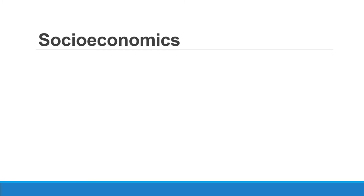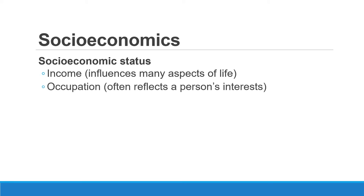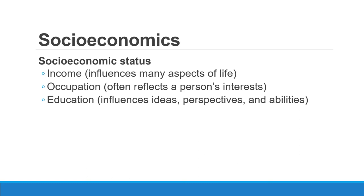Socioeconomics also impacts how people will react to certain speeches and presentations. A person's status is affected by their income — the higher a person's income, the higher the quality of life they will have because they're able to afford more luxuries. Occupation also reflects a person's interests. Just as you are in college with different majors and will go on to do different things, consider the occupation of the individuals you'll be talking to. The level of a person's education also impacts their ideas and beliefs as well.